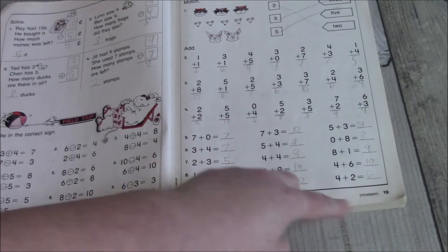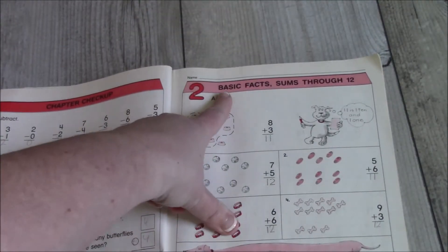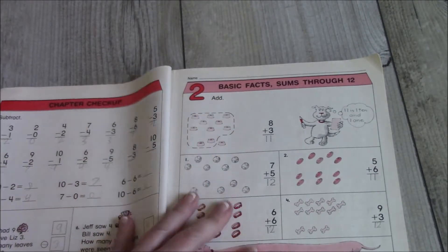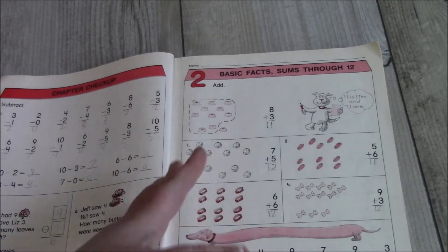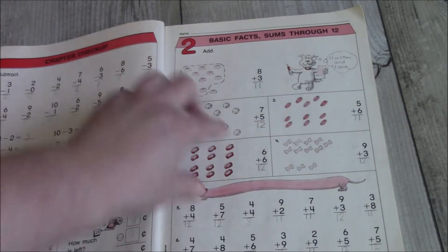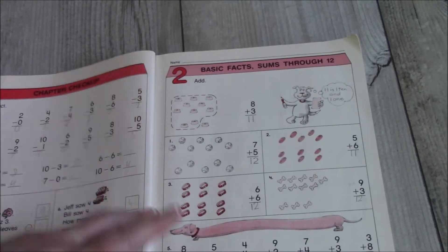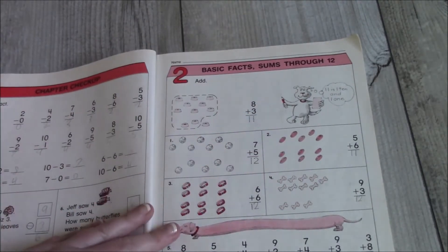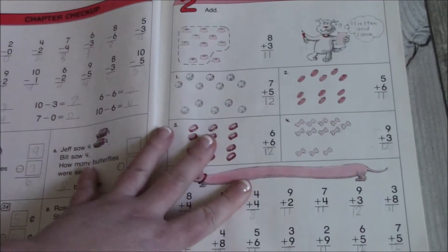So page 19, our first chapter checkup, and then chapter two, basic facts, sums through 10. Now, I can't show you the table of contents, honestly, because that page is ripped. So I'm just going to flip to each chapter and kind of show you what some of the concepts that you will be learning this school year. So again, basic facts and sums through 12. And again, this is a little bit of a refresher from the last school year.